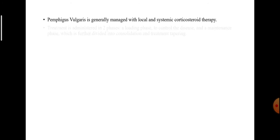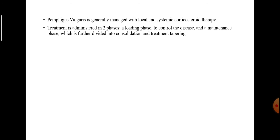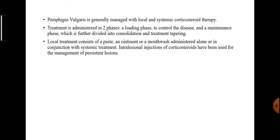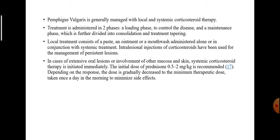Pemphigus vulgaris is generally managed with local and systemic corticosteroid therapy. Treatment is administered in two phases: a loading phase to control the disease, and a maintenance phase which is further divided into a consolidation and treatment tapering phase. Local treatment consists of a paste, ointment, or mouthwash, administered alone or in conjunction with systemic treatment. Intralesional injections of corticosteroids have been used for persistent lesions. In cases of extensive oral lesions or involvement of other mucosa and skin, systemic corticosteroid therapy is initiated immediately. The initial dose of prednisone, 0.5 to 2 mg per kg, is recommended.